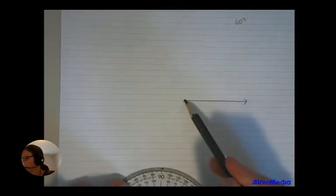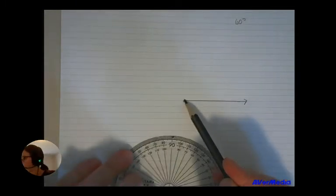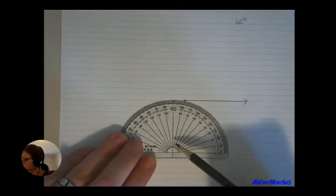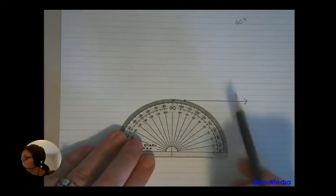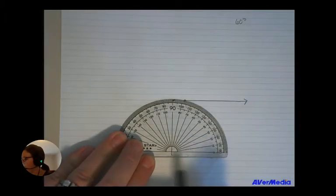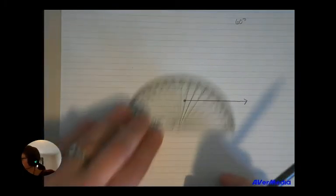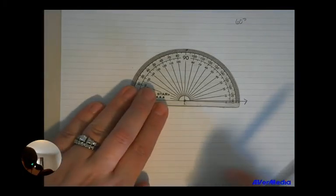And now I'm going to make sure that this part here, the vertex of my angle, lines up with my protractor here where the 90 and the 0 line meet. And the bottom ray lines up with my 0 line on my protractor. So I'm going to line it up nicely like that.